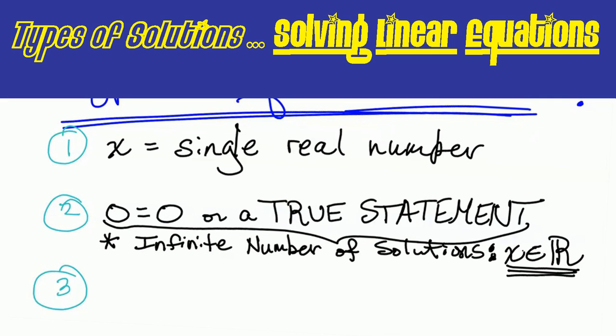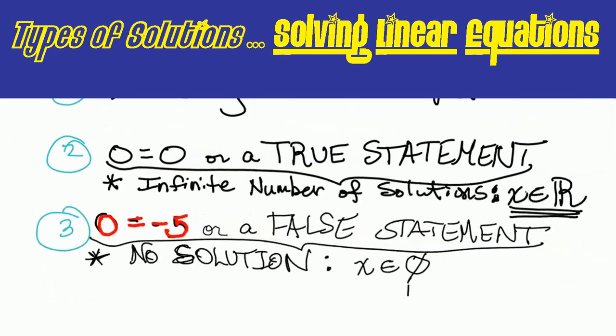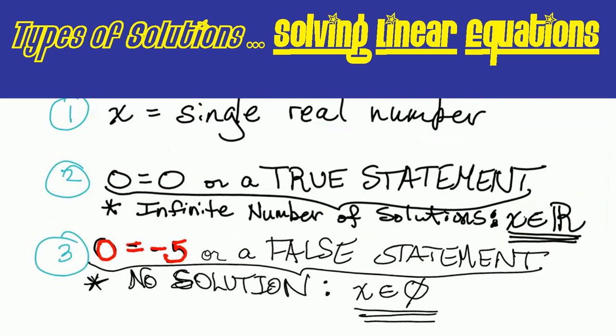The third and final possible outcome: a false statement. Say something like x is equal to negative five. You know, that's not true, right? We know that to be false. So then we would say there is no solution or that our solution x is an element of the empty set. So we could have x could be a single real value, you could have a true statement or you could have a falsehood.